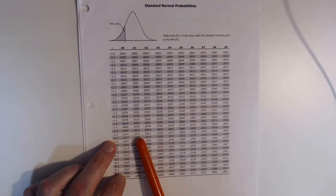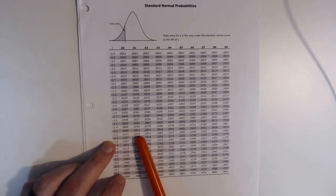So we could find a value of negative 1.21 to be 0.1131, and that's how you would read the Z table.